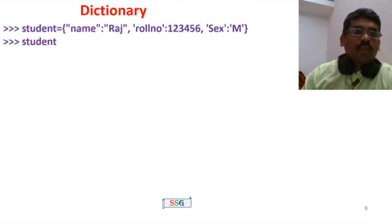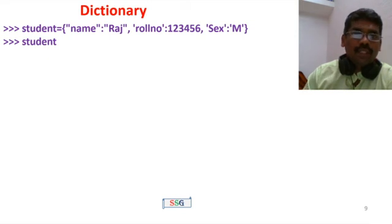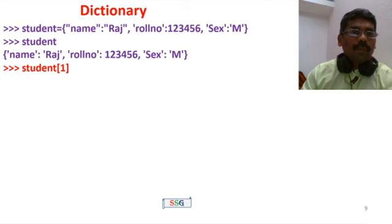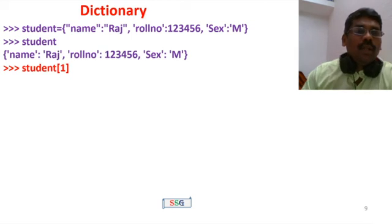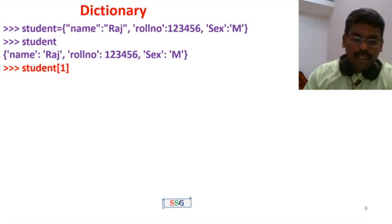For example, create a student dictionary with: name, roll number, and section. Store the student's name, roll number (like 3, 4, 5, 6, 7, 8), and gender (male). Print the student dictionary. Python uses single or string input for keys such as name, role, and email.